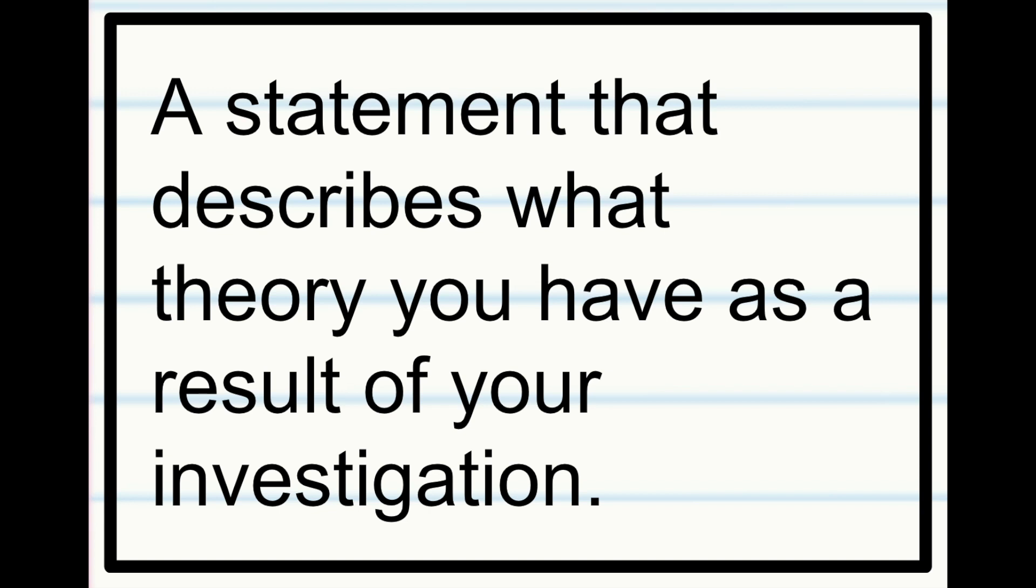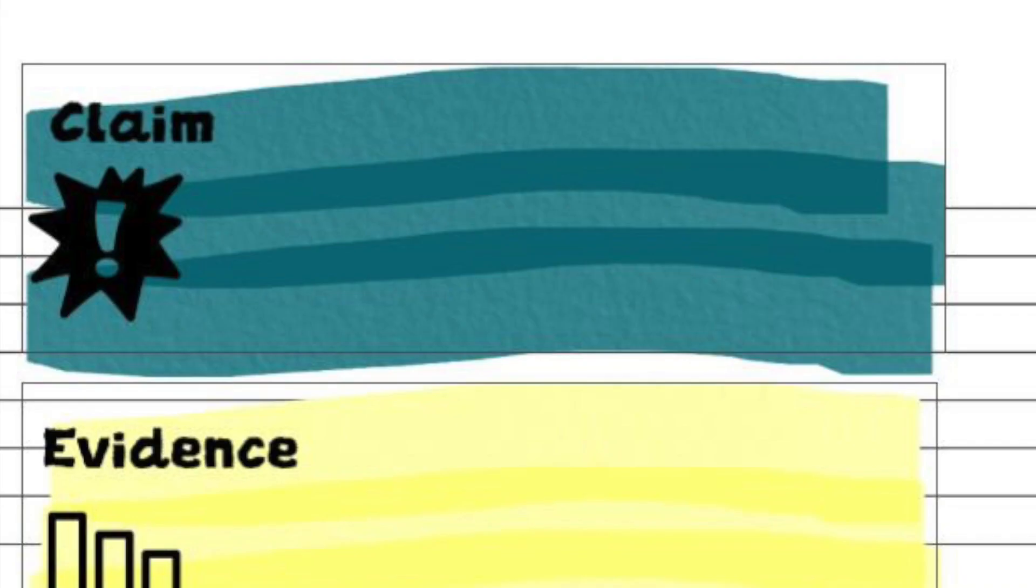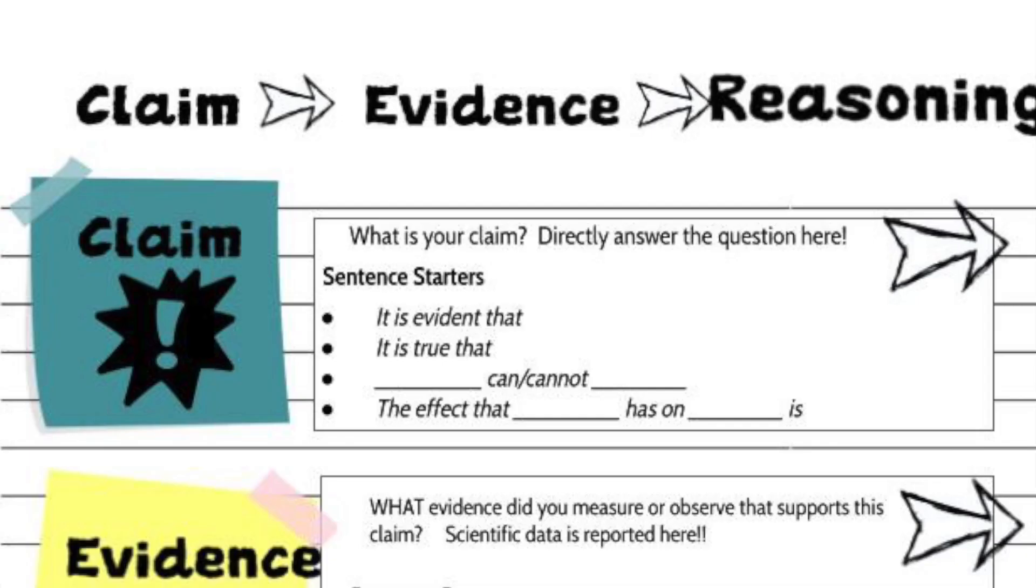In the case of our wind turbine investigation, our claim is that when the kinetic energy of an object changes, energy is transferred to or from that object. So we're going to add that claim in the claim section of our sheet. Be sure you use one of the sentence starters to help you and make your language flow more smoothly.